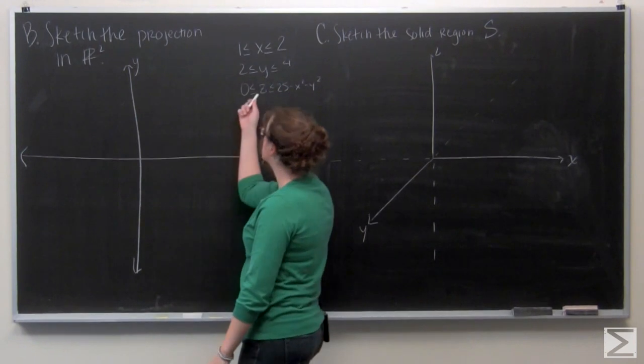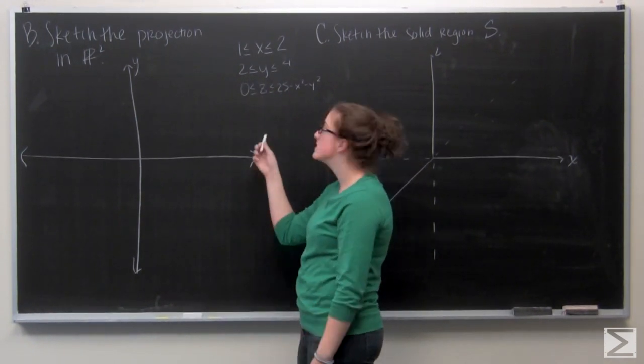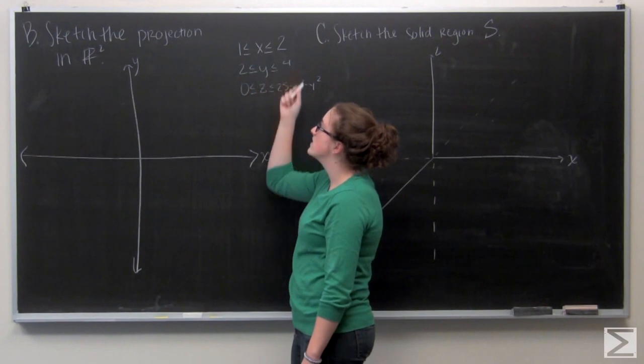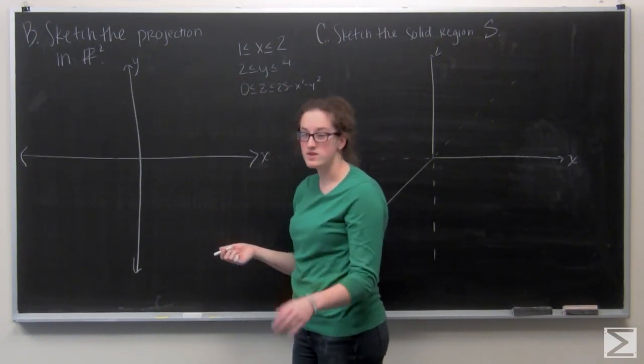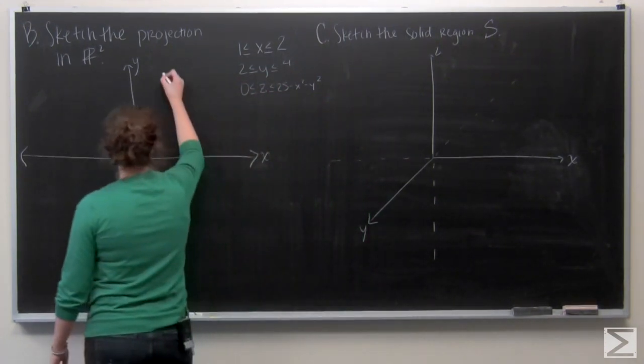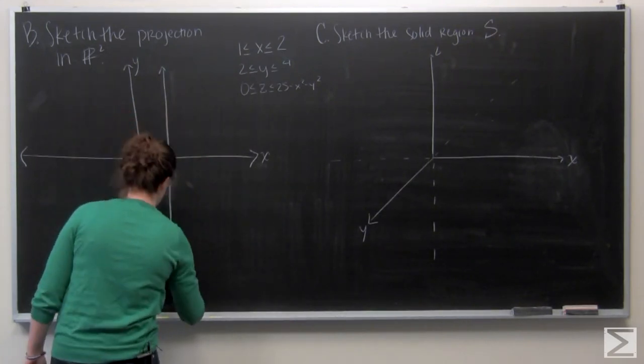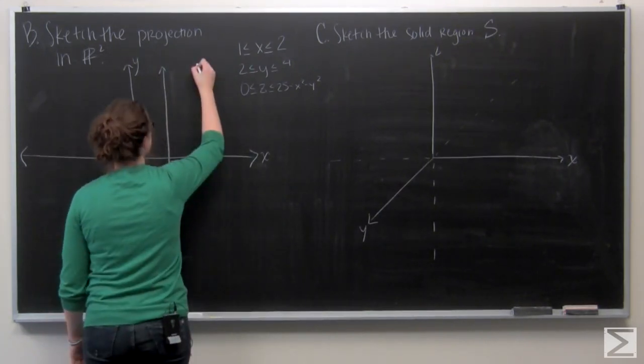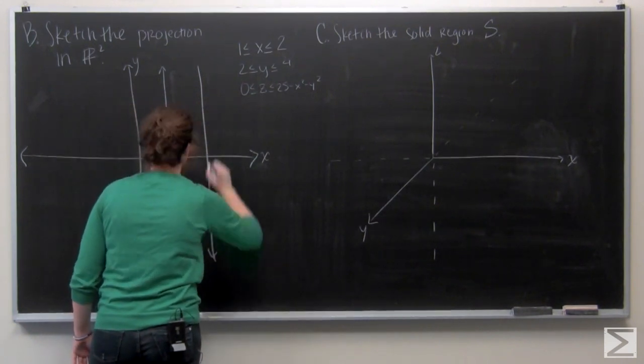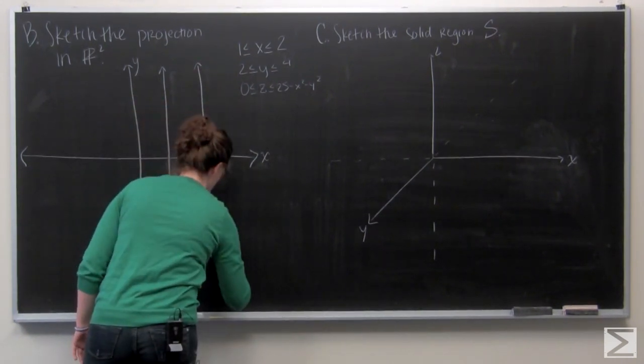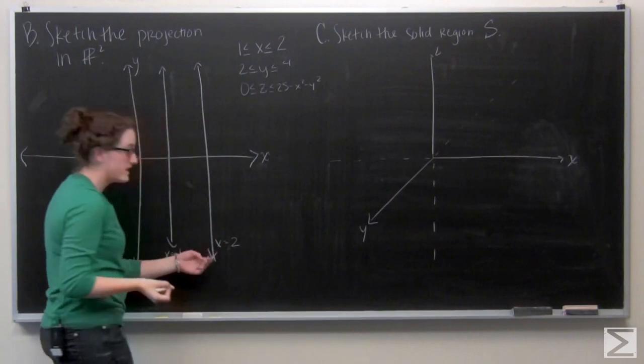I've rewritten our bounds here which will help us. Let's work on x first. It goes from x equals 1 to x equals 2. Let me draw those two lines. X equals 1.